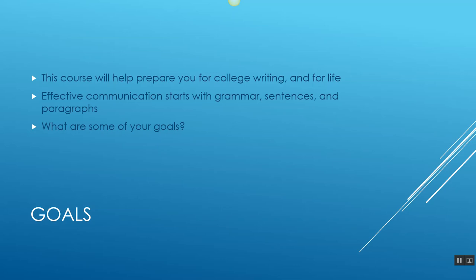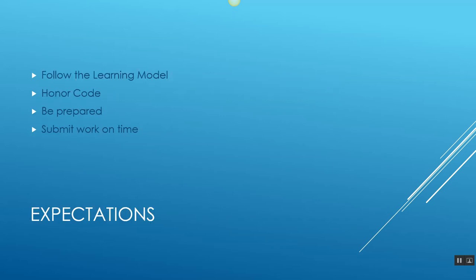Let's talk about some goals here. As I mentioned earlier, the primary overall goal of this class is to help prepare you for college writing, but also for life. Because if you want to succeed, if you want to be professional and be respected in life, part of that is going to be with how you communicate. Effective communication starts with grammar, sentences, and paragraphs, being able to speak and write with proper grammar, being able to properly construct sentences and paragraphs. What are some of your goals? What are some of the goals that you have for this class, for what you're going to learn and how you're going to use it? Just be thinking about that, and you're welcome to share what you come up with in our discussions.